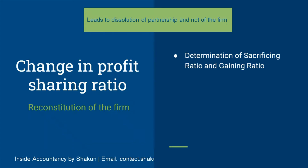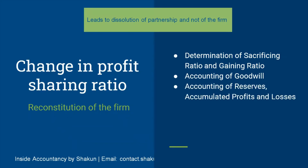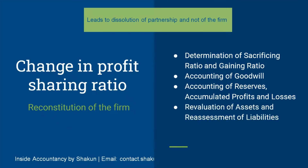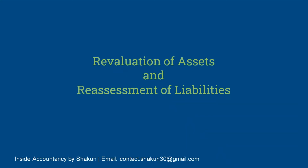Those issues are: determination of sacrificing and gaining ratio, accounting treatment of goodwill, accounting of reserves, accumulated profits and losses, revaluation of assets and reassessment of liabilities, and finally adjustment of capital. We have already talked about the first three treatments in detail in my previous videos — you can click on the i button for more details. So our topic for today would be revaluation of assets and reassessment of liabilities.